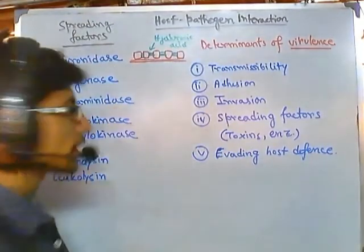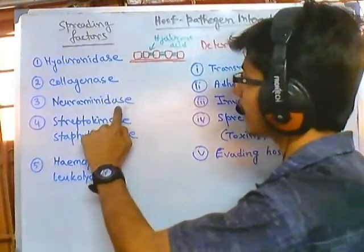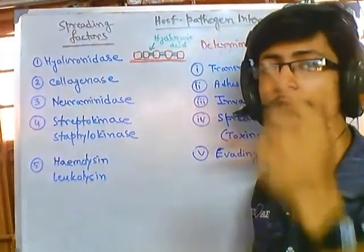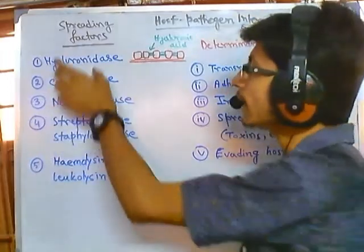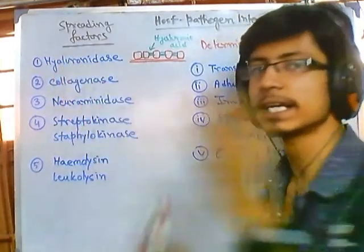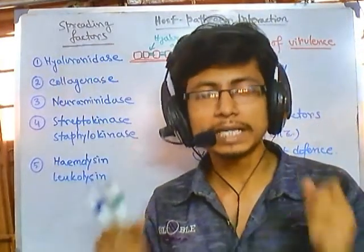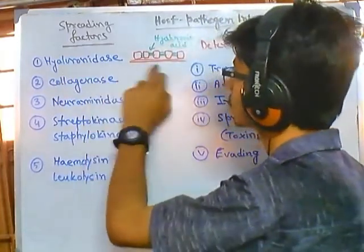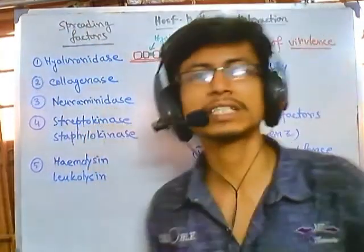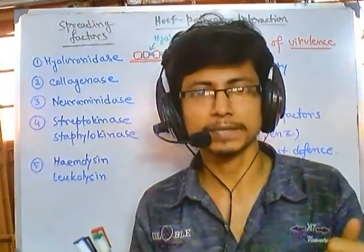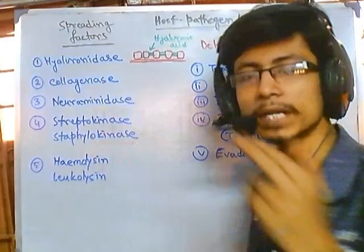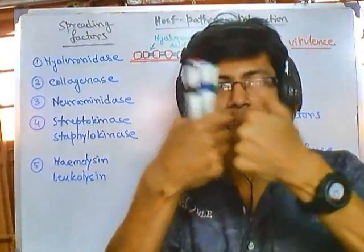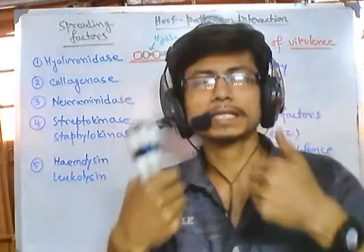The third kind is neuraminidase, again an enzyme that disintegrates another cementing material of tissue called neuraminic acid. Both hyaluronic acid and neuraminic acid are important materials in connective tissue to build a proper network and cement cells tightly. Hyaluronic acid is found all over our body, but neuraminic acid is usually found in our intestinal lining, holding intestinal cells tightly together.